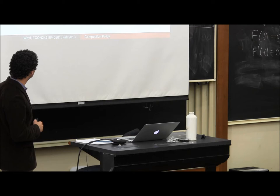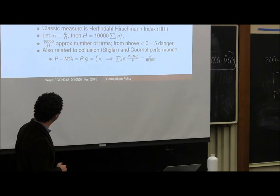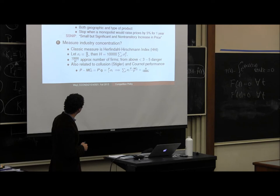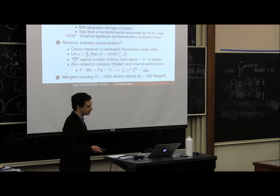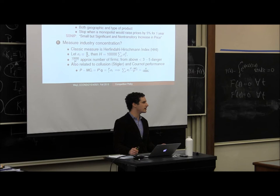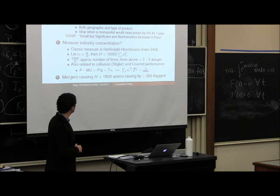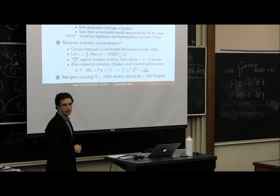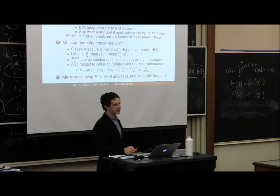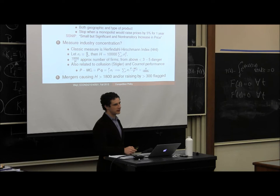You can relate the HHI to markups firms charge. Every firm's markup is P-prime times Q in the Cournot model, which equals the price divided by the elasticity times their share. So the share-weighted markup is also the Herfindahl Index divided by 1,000 times the elasticity of the industry. The HHI is also the share-weighted average share, and remember the share was our theta value in the generalized Cournot model with asymmetric firms. The typical policy was that any merger that would cause H to go above 1,800 or that raised it by 300 was viewed as potentially dangerous — which is significantly below the danger region from the perspective of Bresnahan and Reiss.